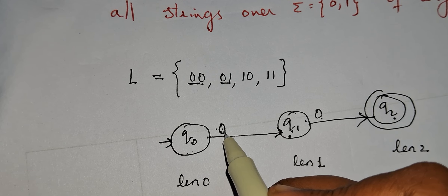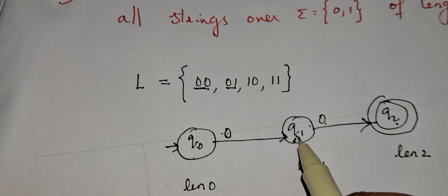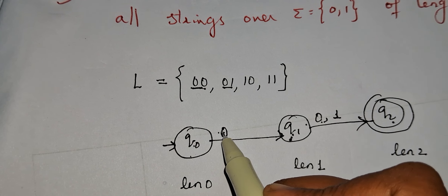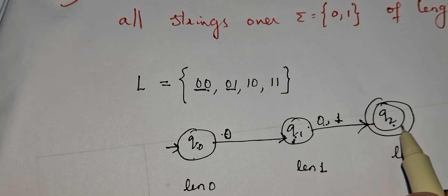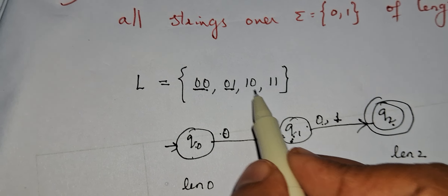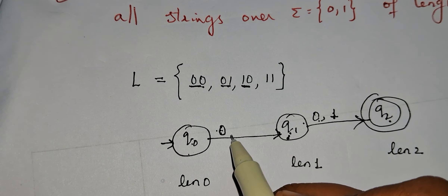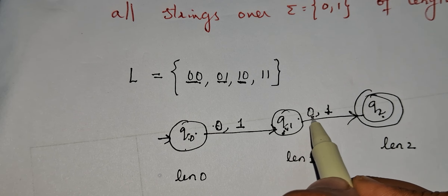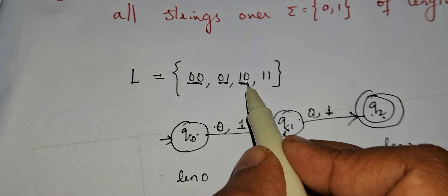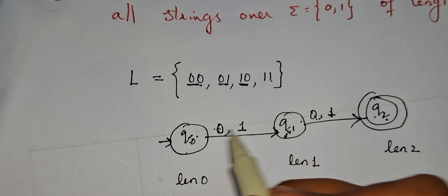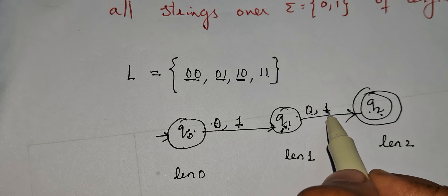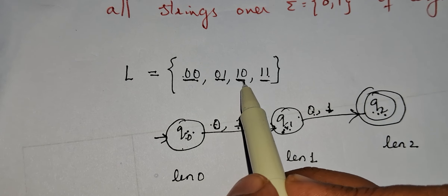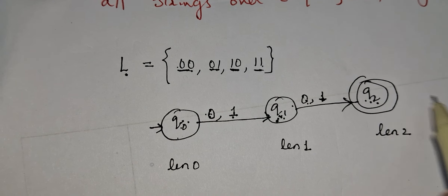For 01: q0 on 0 goes to q1, then q1 on 1 goes to q2, so 01 is accepted. For 10: q0 on 1 goes to q1, q1 on 0 goes to q2, so 10 is accepted. For 11: q0 on 1 goes to q1, q1 on 1 goes to q2, so 11 is also accepted.